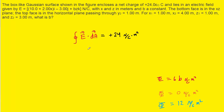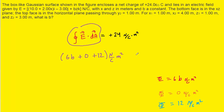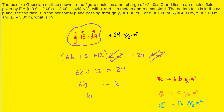Returning to the original Gauss's Law equation, the total electric flux is the sum of all three pairs of faces: 6b plus 0 plus 12 equals 24 newtons per coulomb meters squared. The units cancel, leaving 6b plus 12 equals 24. Subtracting 12 from both sides: 6b equals 12, and therefore b equals 2. This is the correct answer.